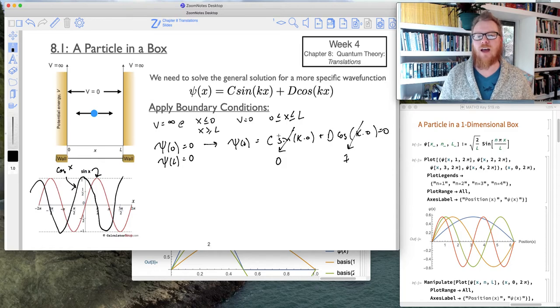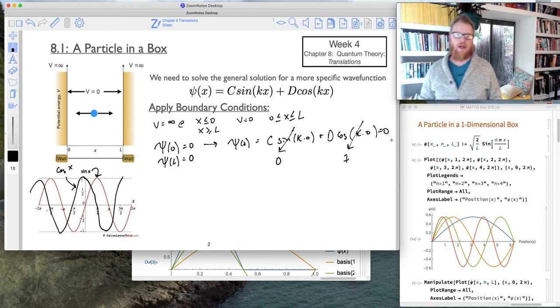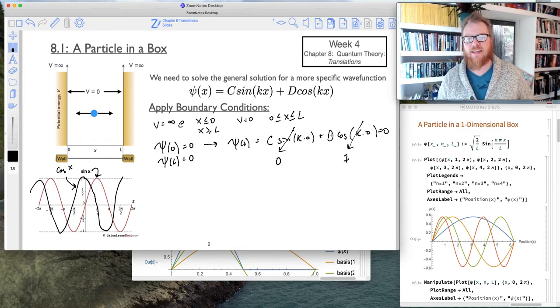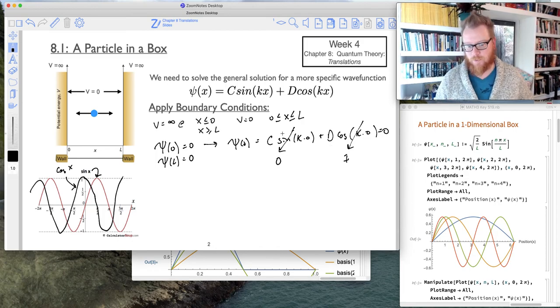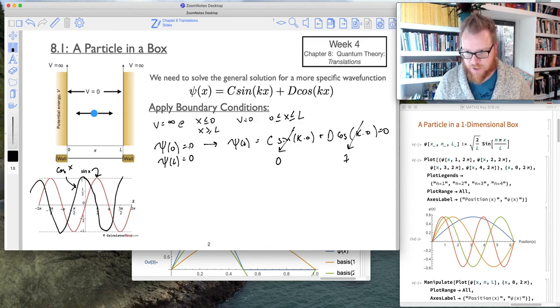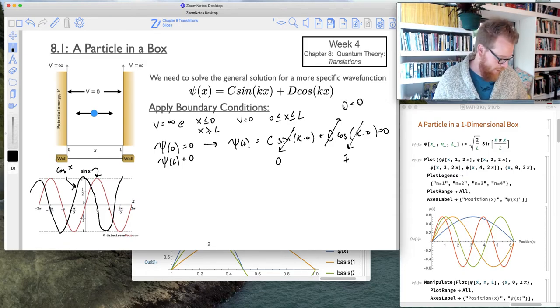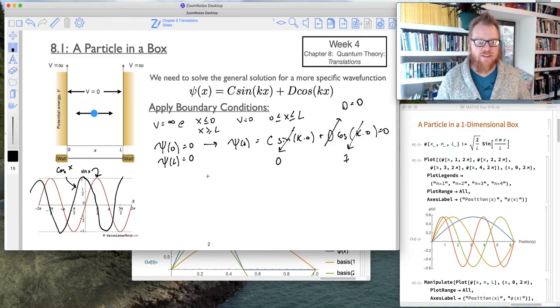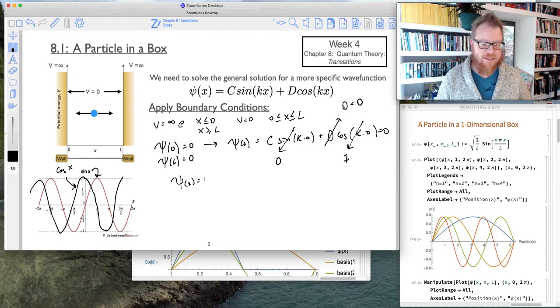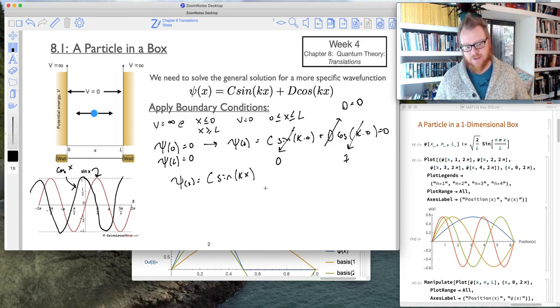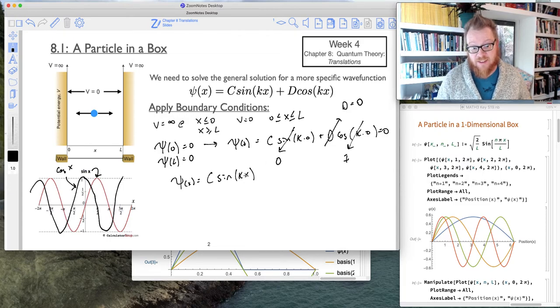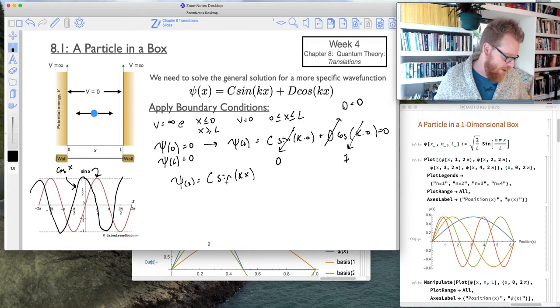Well, we know that psi of 0, this whole thing has to equal 0. So what this tells us is this D constant has to be 0. Because once again, psi of 0 has to be 0, as given by our boundary condition. We know the sine of 0 is 0, so that drops out that whole term. The cosine of 0 is 1, so that tells me that this coefficient D has to be equal to 0. So now we'll reestablish that we know psi of x has to equal C times sine of kx.